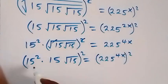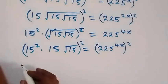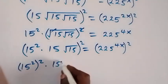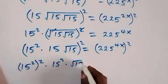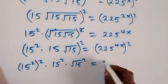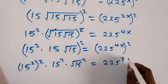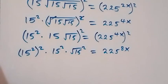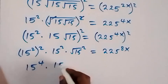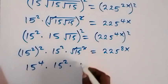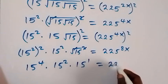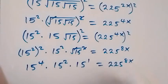We can also square both sides again. The square here will affect each of these numbers: we have 15 squared, then squared, then squared again. This gives us 15 raised to power 4, times 15 squared, then the square cancels the square root. We are left with 225 raised to power 8x.